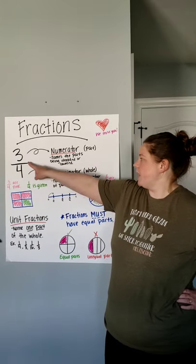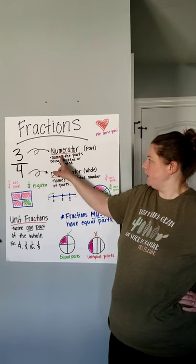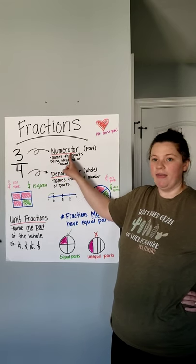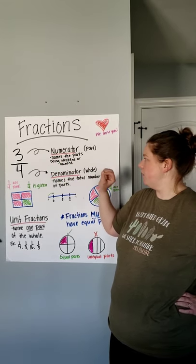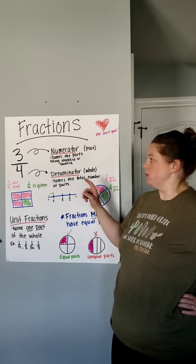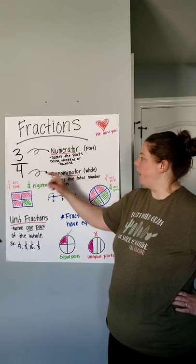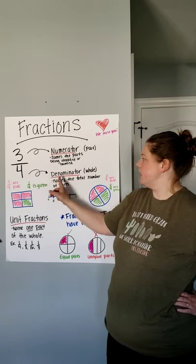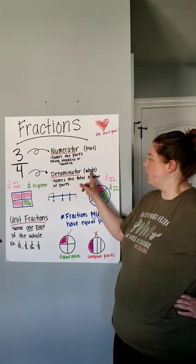So, this is a fraction three-fourths. This top number here is called the numerator, and the numerator names the parts of the whole that are being identified or counted. So, the numerator is just a part, and then the four down here represents the denominator, which is the whole.